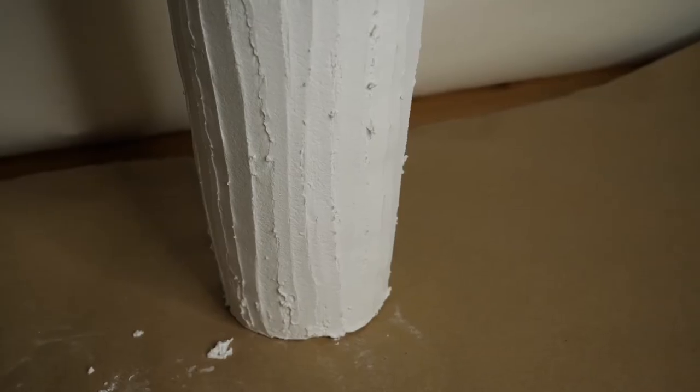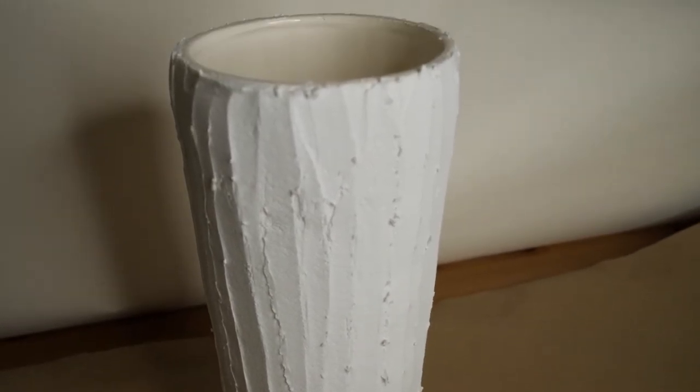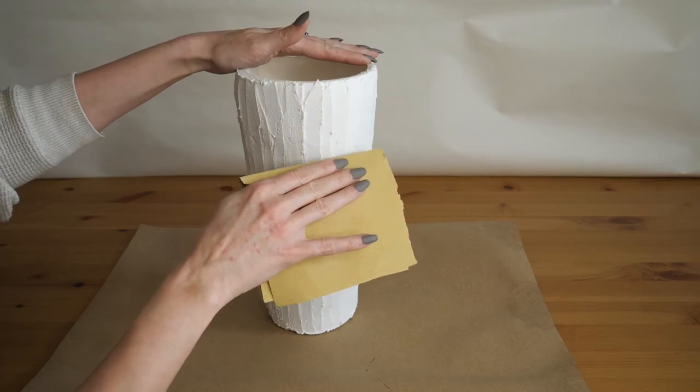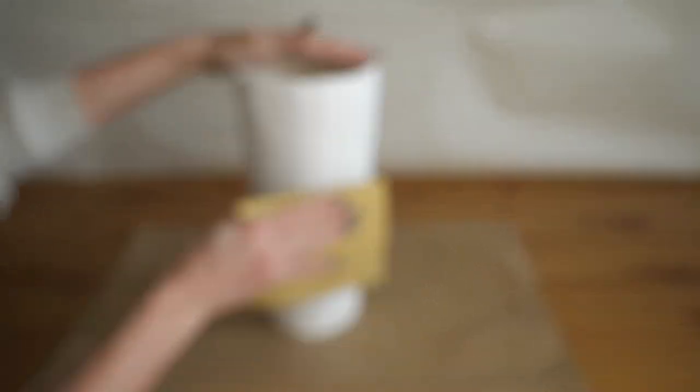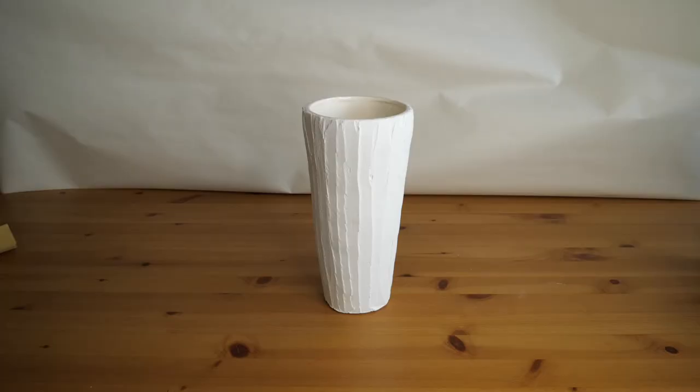Once this dried, it looked really good, but it had these little bobbles all over it that needed removing. I did this by quickly and gently sanding them away. Once it was all smoothed out, this looked much better.